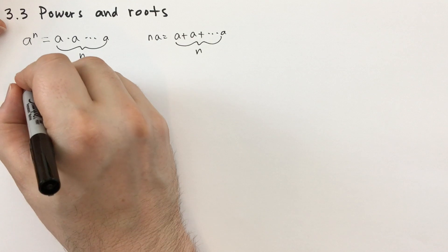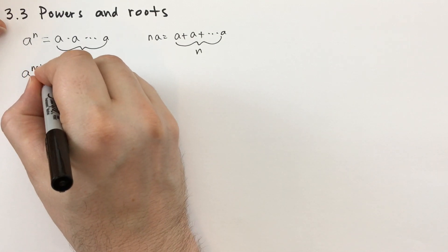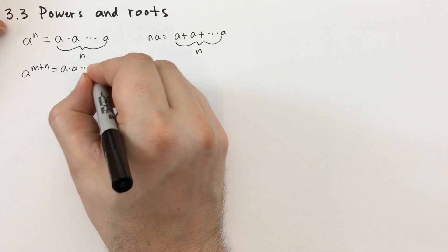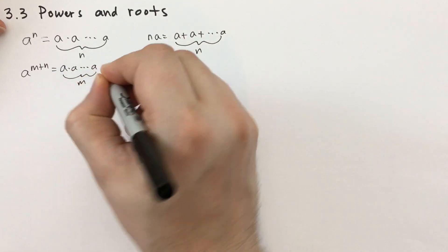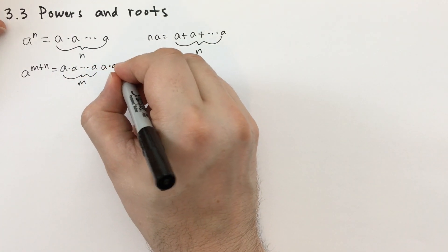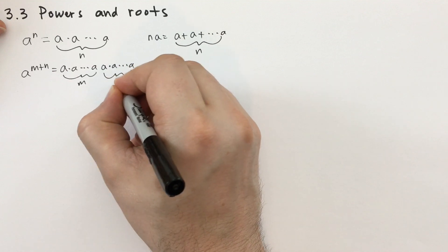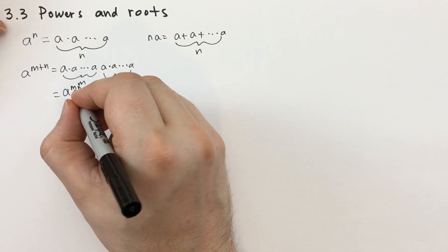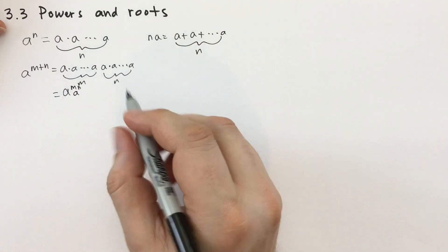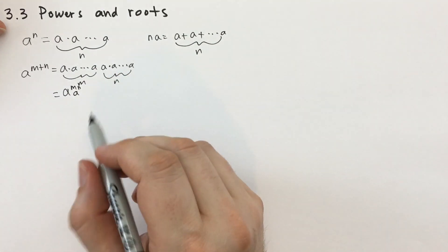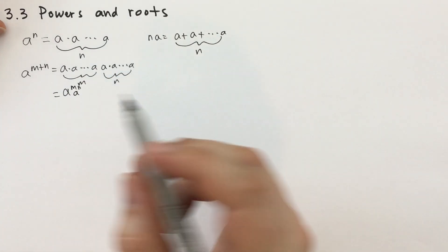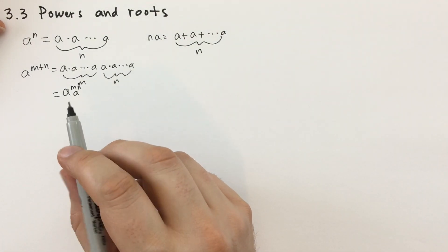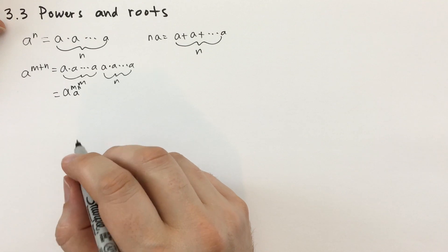First, we're going to find some more rules. We have a to the m plus n, which is the same as a times a (m times) and a times a (n times), so that's the same as a to the m times a to the n. This makes sense when m and n are positive integers.